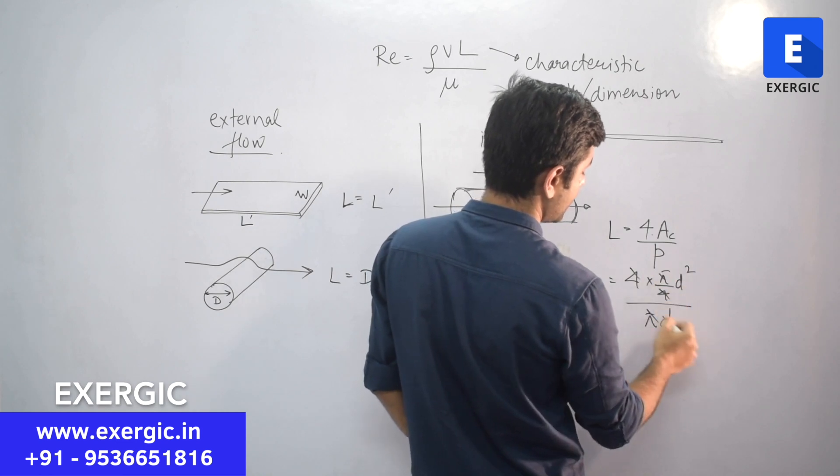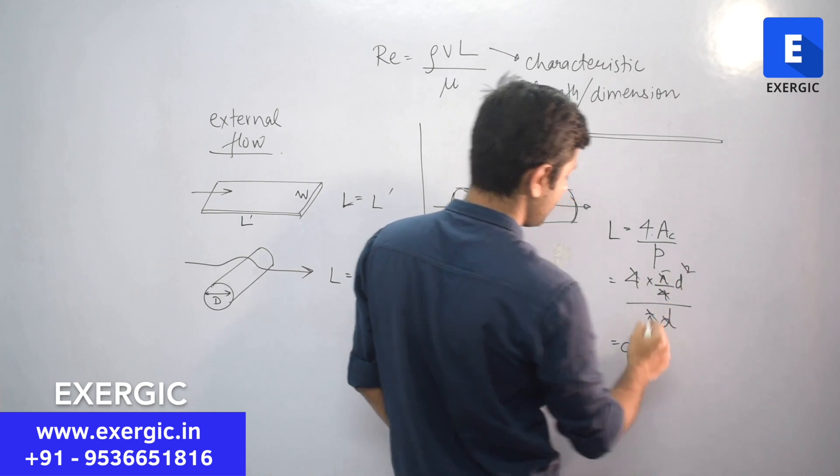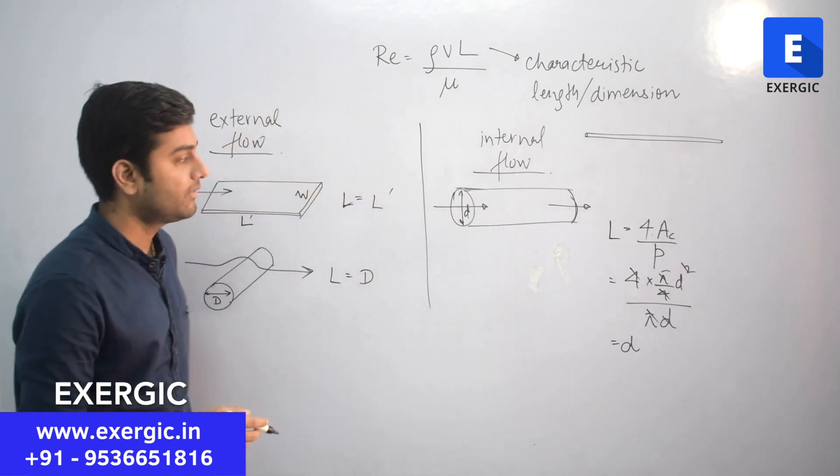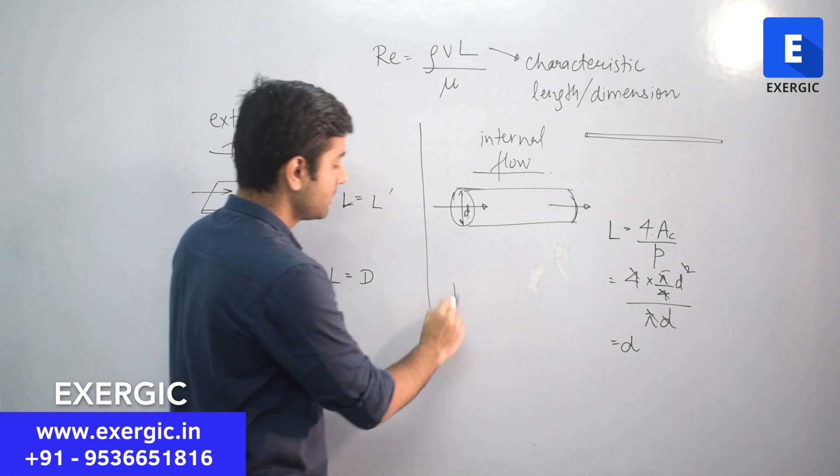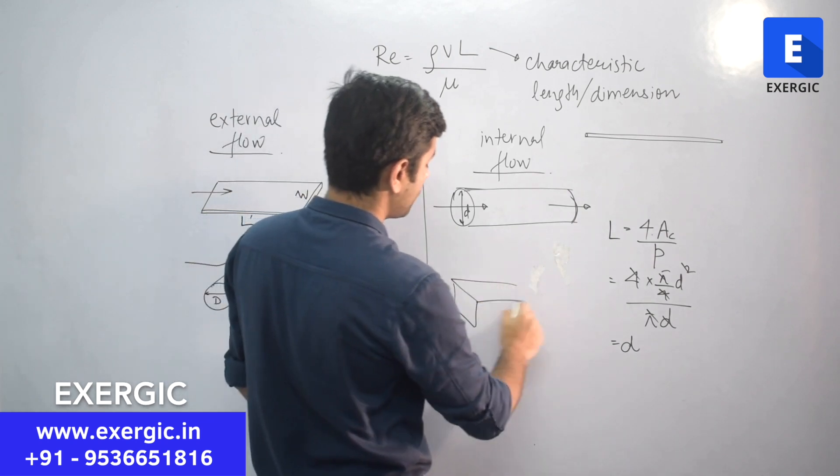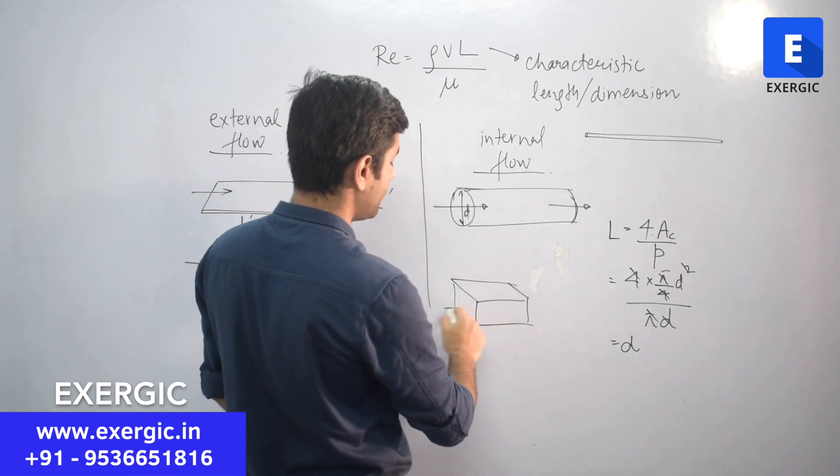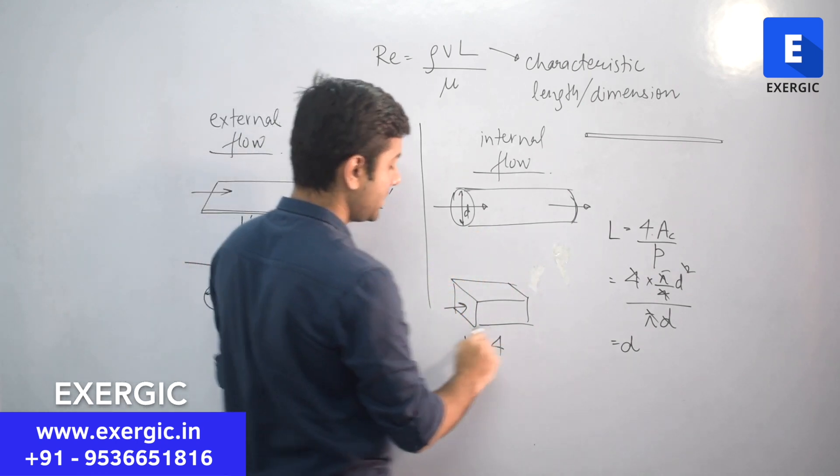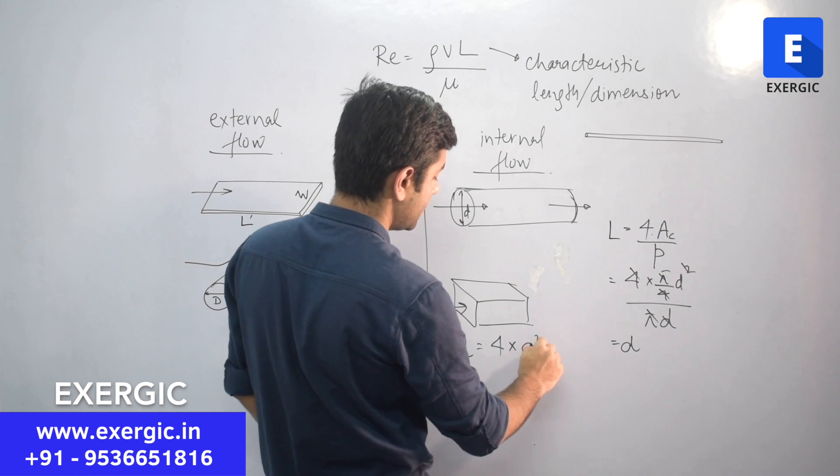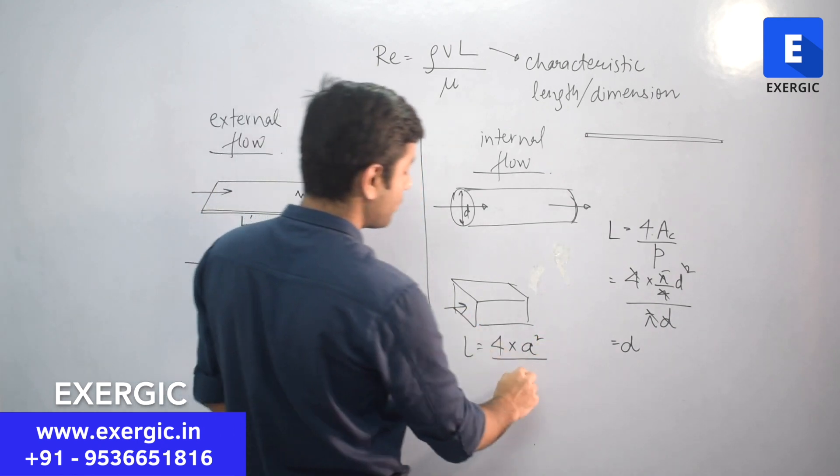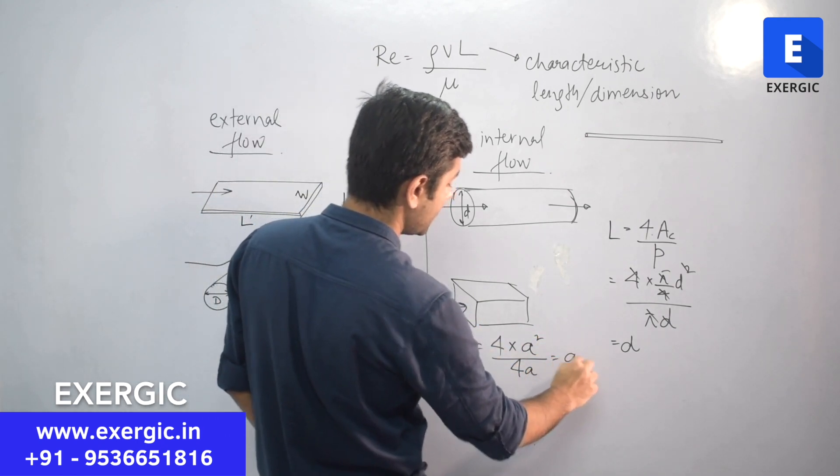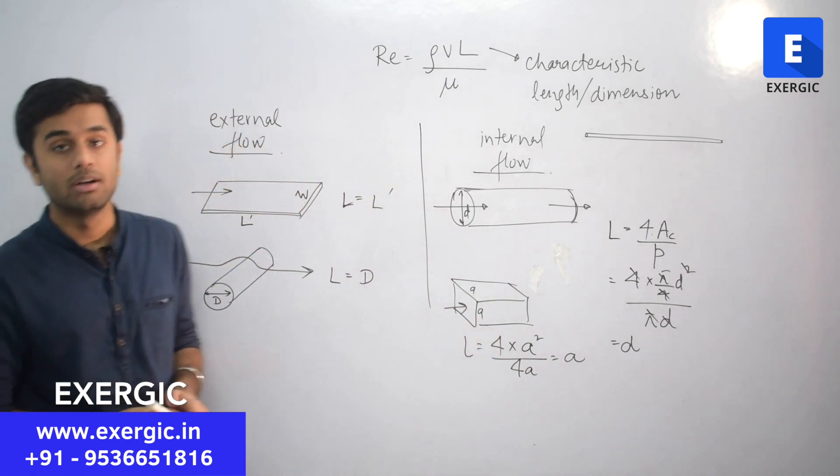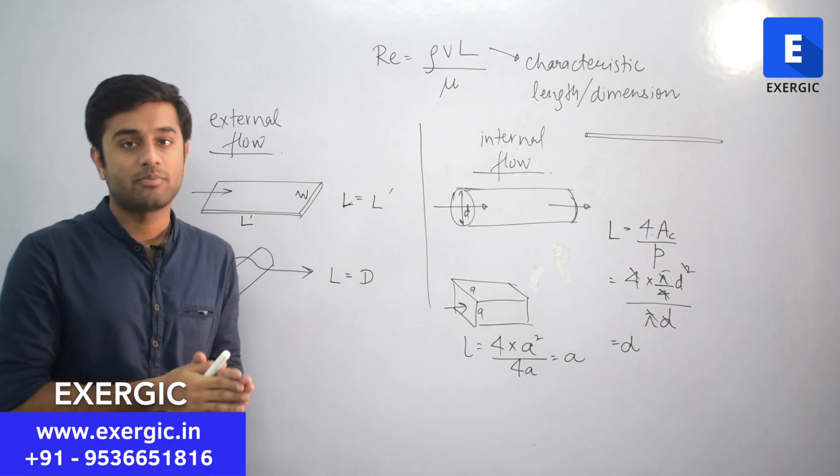π, π cancel, 4, 4 cancel, d's cancel, ultimately we will have diameter. So its diameter will be the characteristic dimension. If it is square, if the pipe is square in cross sectional area, then also you can calculate by the same way. L is equal to 4 times of area is side square, side is let's say A. Perimeter is 4A. So, upon cancelling you will get A, the side, that is equal to characteristic dimension for the flow through square cross sectional pipe.